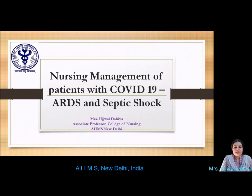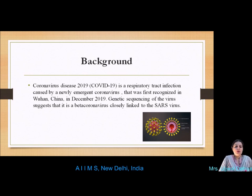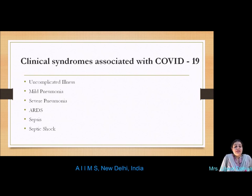Now we will discuss nursing management of patients with COVID-19 specifically with ARDS — acute respiratory distress syndrome — and septic shock. COVID-19 is a respiratory tract infection caused by a newly emerged coronavirus first recognized in Wuhan, China in December 2019. Genetic sequencing suggests it is a beta coronavirus closely linked to the SARS virus. Patients may present with uncomplicated illness, mild pneumonia, severe pneumonia, acute respiratory distress syndrome, sepsis, or septic shock.